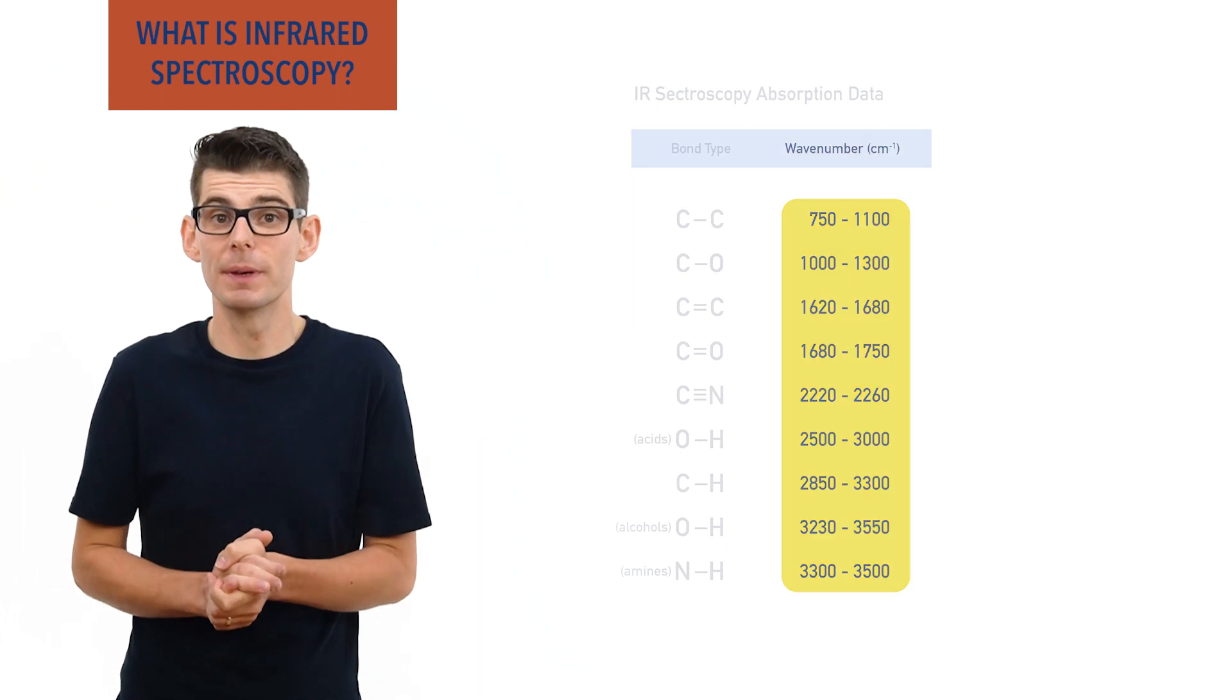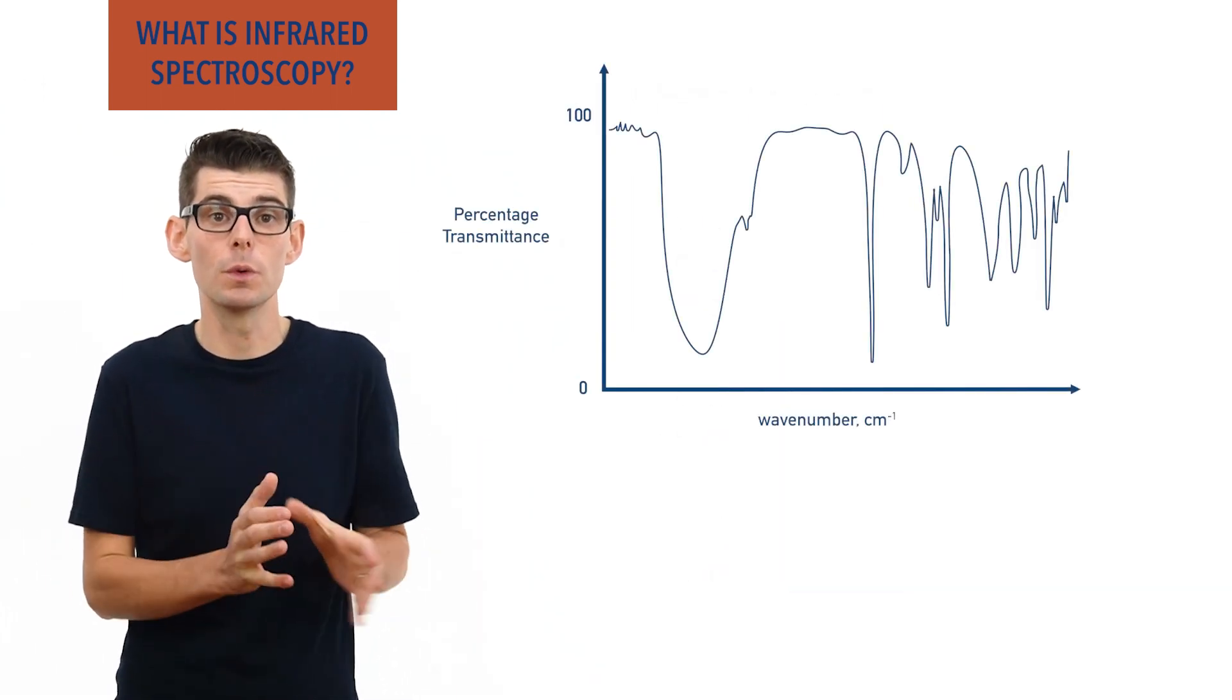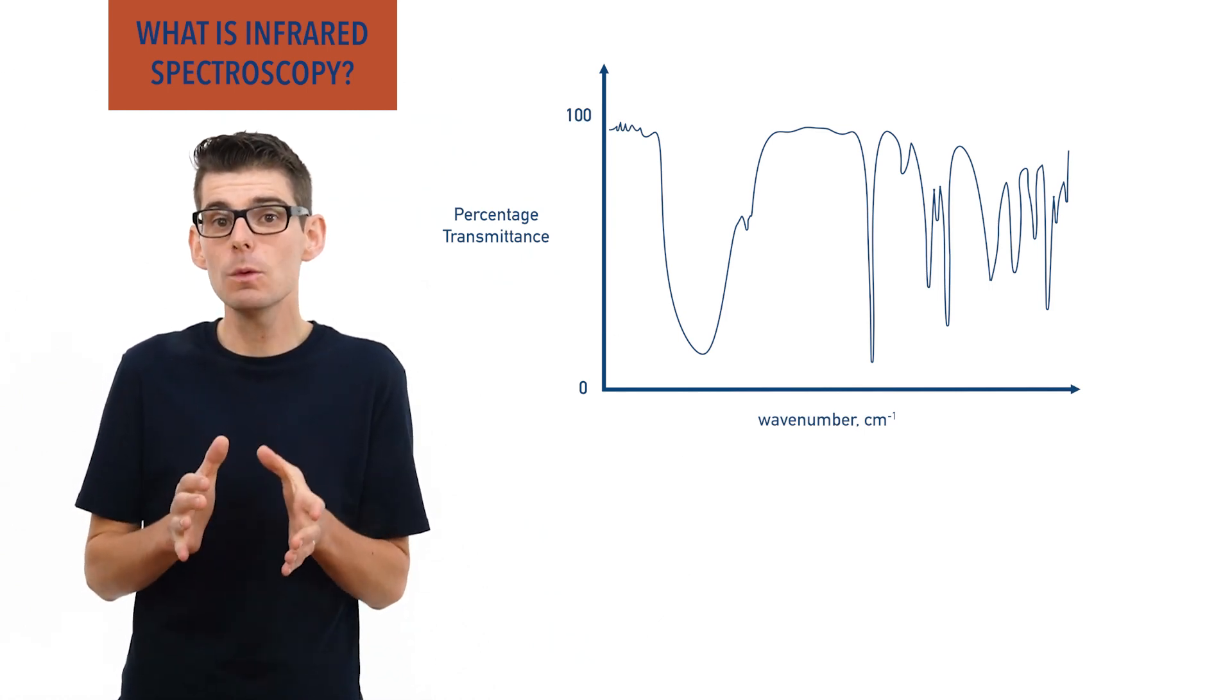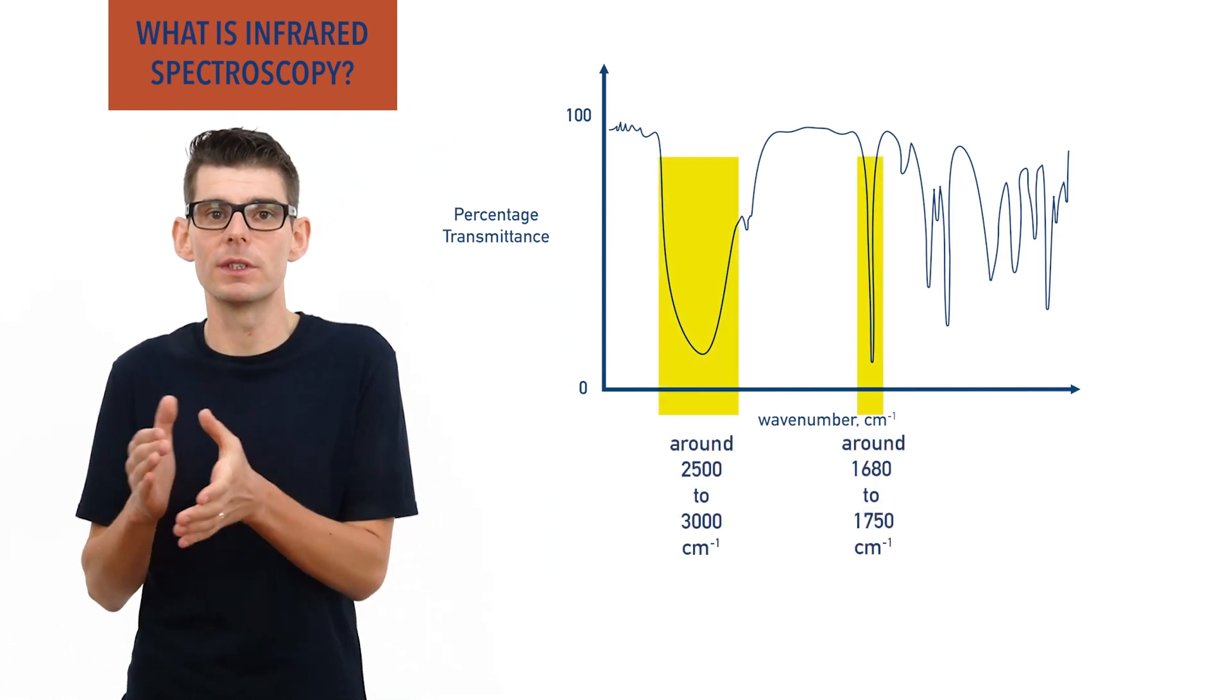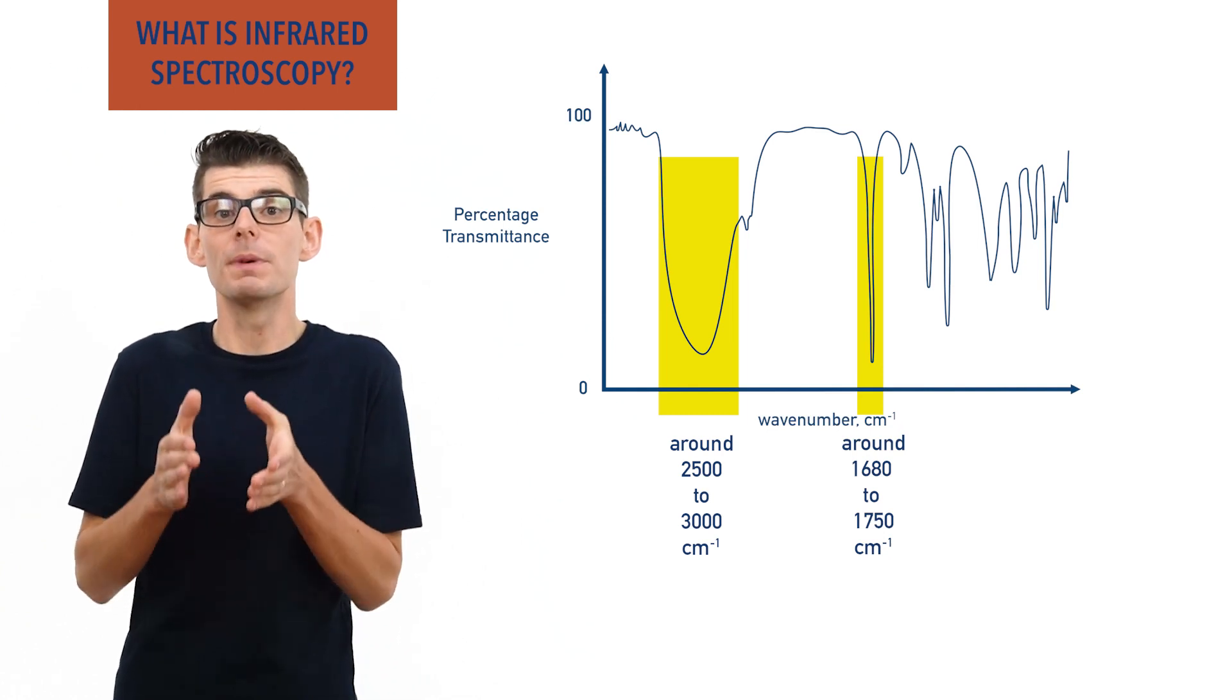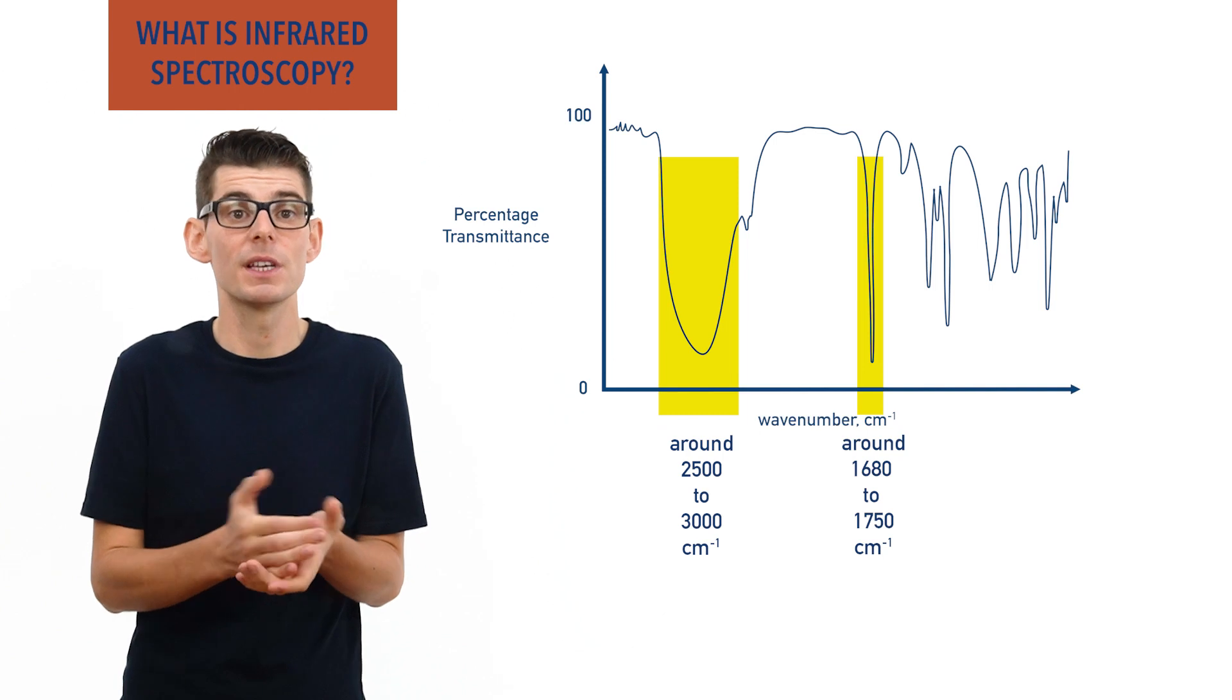In infrared spectroscopy, spectra are produced that show the waves that pass through a sample. This is called transmittance. Any waves or wavenumbers that weren't transmitted must have been absorbed by bonds in the sample. These wavenumbers absorbed can be compared to a data table and the corresponding bond types can be determined.